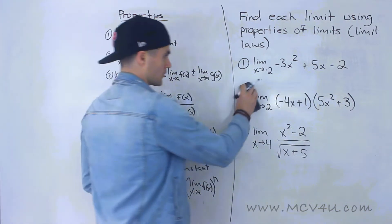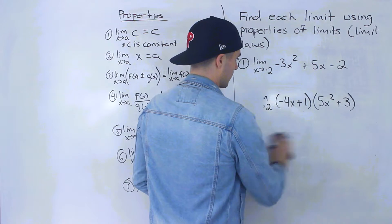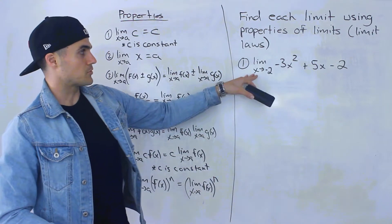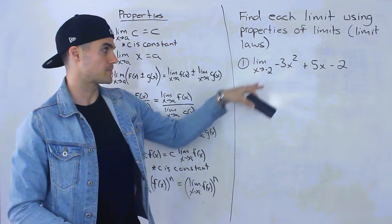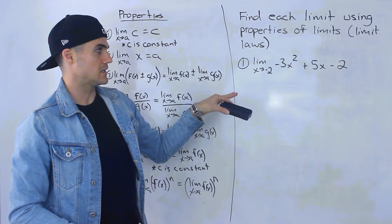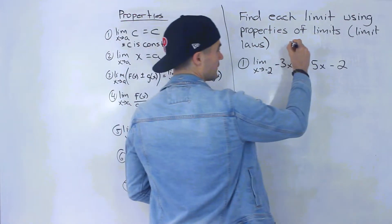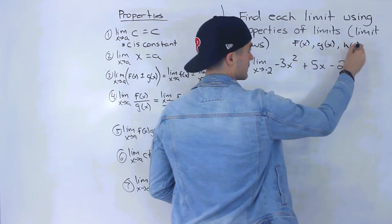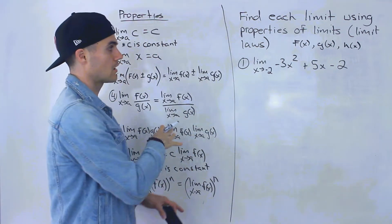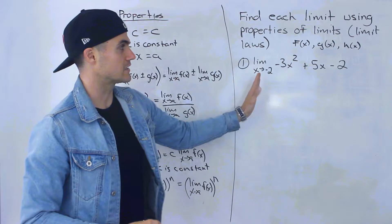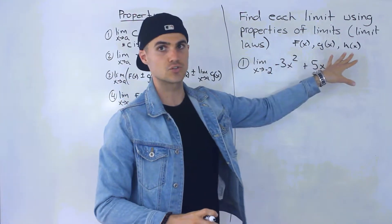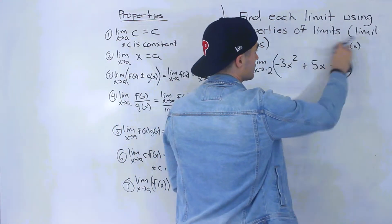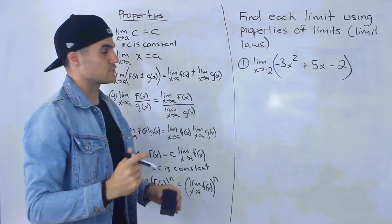So number two and three, I'm actually going to erase for now just to give myself some more room for number one. So number one, we got the limit as x approaches negative two of negative three x squared plus five x minus two. Now notice that this limit is different than the video before. In the video before, everything was in terms of f of x, g of x, and h of x, and we were told what those limits were. But notice in this question, we're given an actual function — we're not given f of x, g of x, h of x.